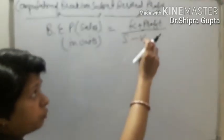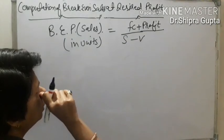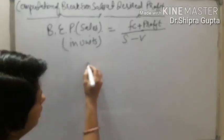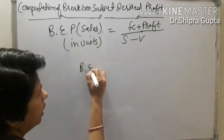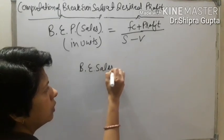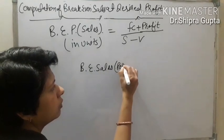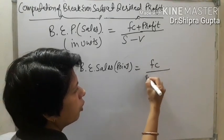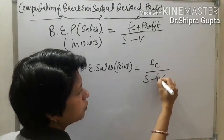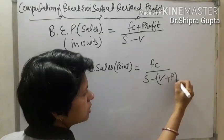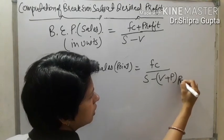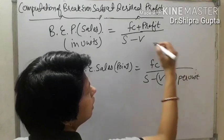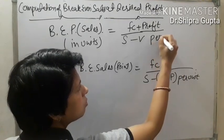But if the profit is given per unit, we cannot apply that formula. In that condition, we apply: Break-Even Point = FC / (S − V + P), where S, V, and P are per unit values, and FC is the lump sum amount.